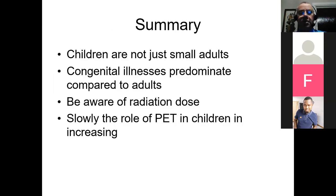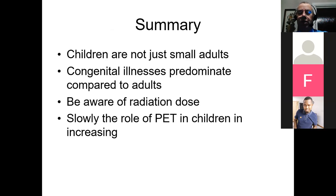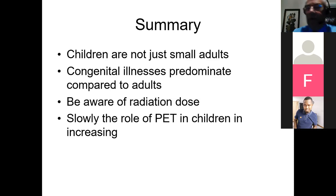In summary: remember that children are not small adults — they have specific issues. In younger children, congenital illnesses predominate, which you don't see so much in adults. Be aware of radiation dose but don't be frightened of it — it's important that we diagnose these problems, particularly if there is a management option. The role of PET in children, both with FDG and other agents, is slowly increasing, but less quickly than in adults.